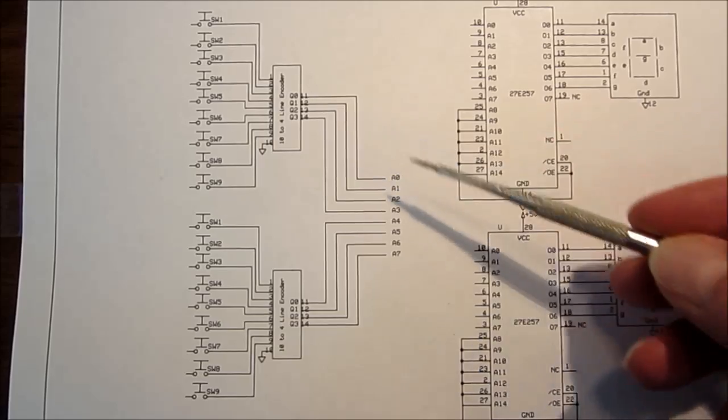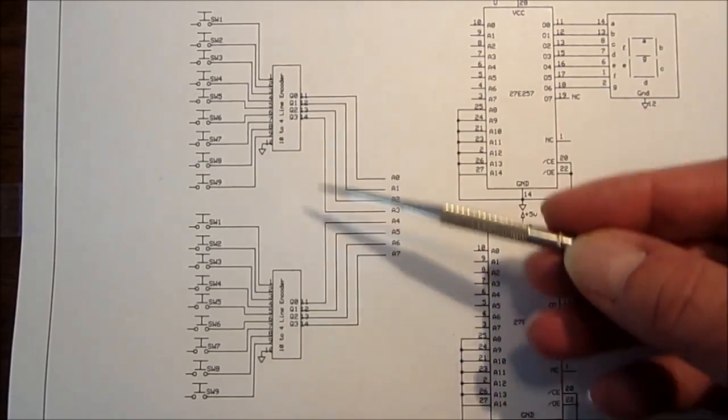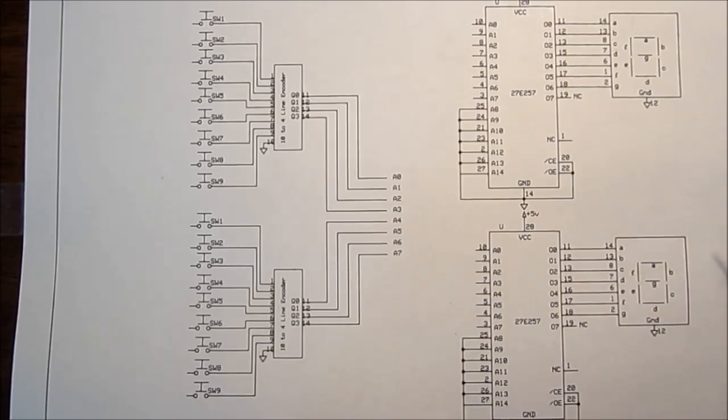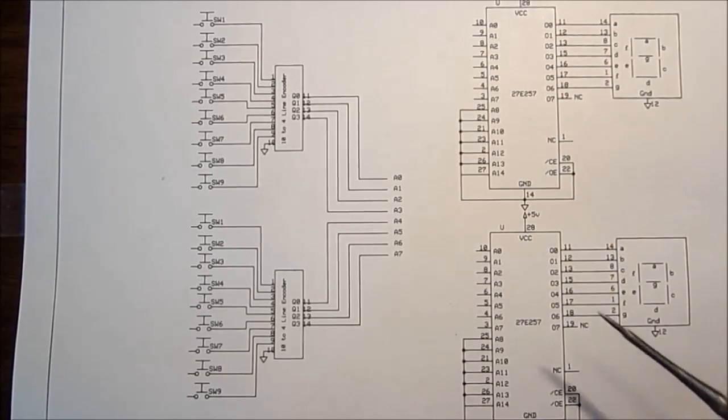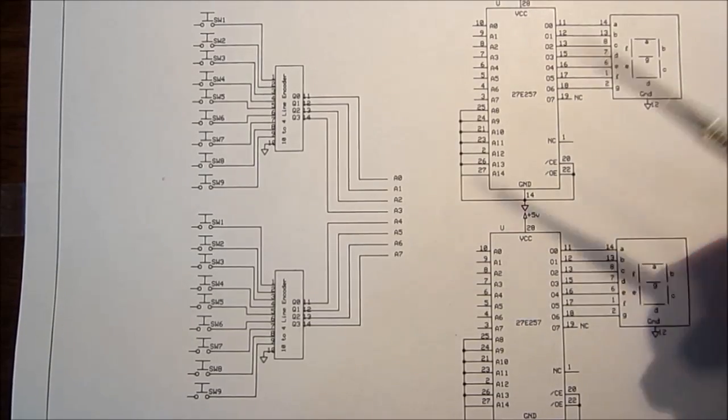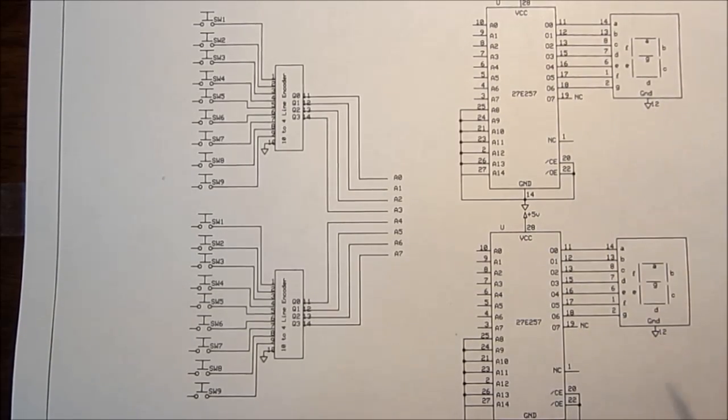So here we would have an additional two chips. These would be 16 pin chips. And then we would be able to use only half of the address lines here and have the same results.